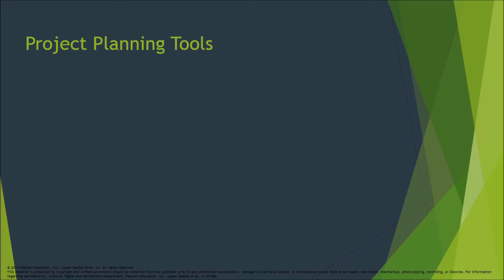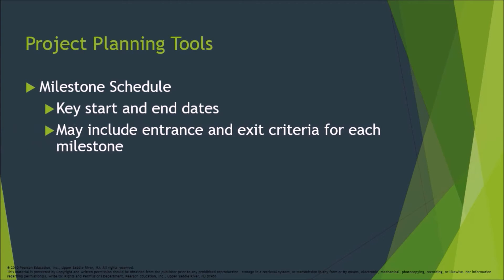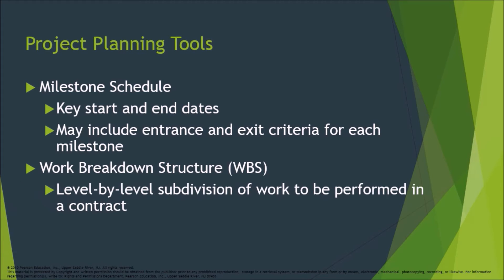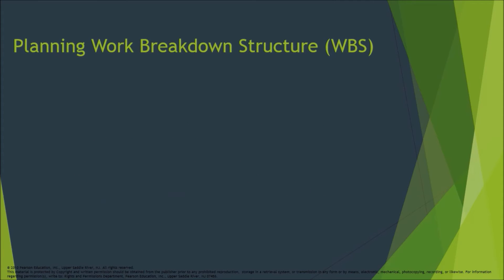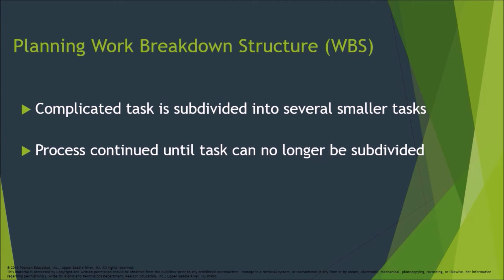Project planning tools include the Milestone Schedule — key start and end dates, which may include entrance and exit criteria for each milestone. Work Breakdown Structure (WBS) is a level-by-level subdivision of work to be performed in a contract, providing a common framework or outline. In planning WBS, a complicated task is subdivided into several smaller tasks, and this process continues until the task can no longer be subdivided.